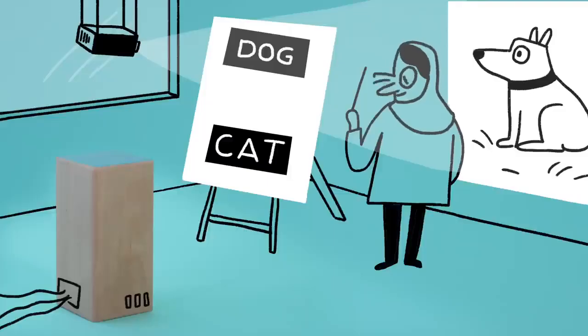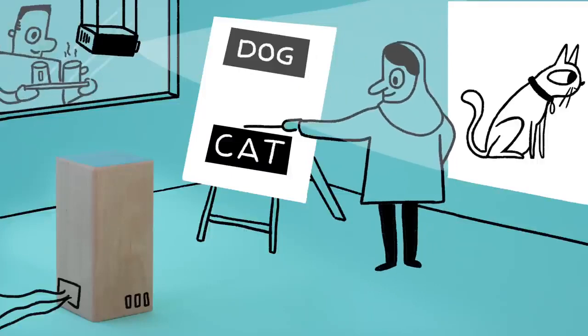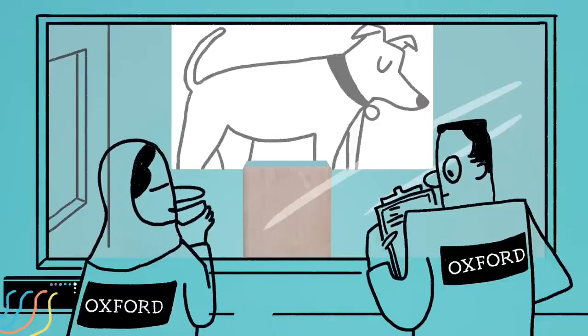You could begin by feeding it images and telling it, this one's a dog, that one's a cat. A computer program to learn will seek statistical patterns within the data that will enable it to recognize a cat or a dog in the future.